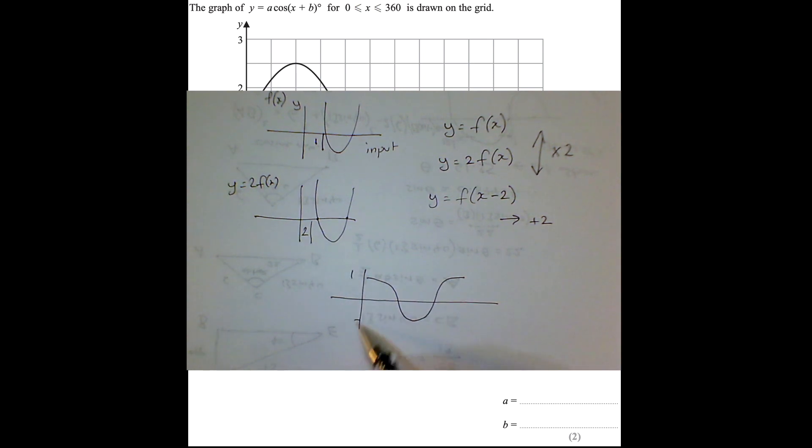Now here's my bog-standard cosine wave. It goes, as you know, between 1 and minus 1. It cuts through 0, 90, 270, and it's at minus 1 at 180. You just need to know that graph, cosine graph.